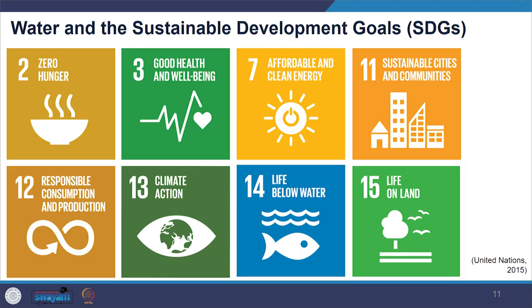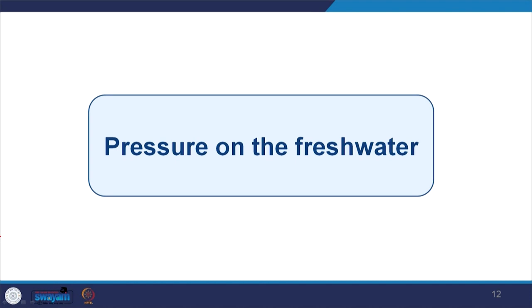Fresh water is one of the very important parts of the entire SDG framework. SDG 2 deals with food security, SDG 3 deals with health and well-being. You can see the number of SDGs which are directly connected with water. Moving on, we see what kind of pressure there is on fresh water.